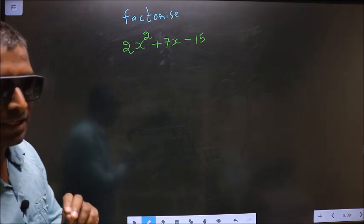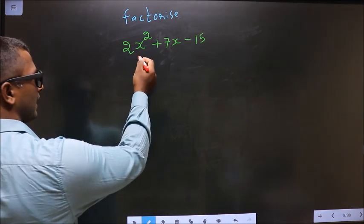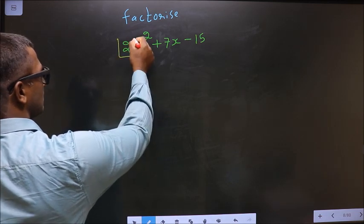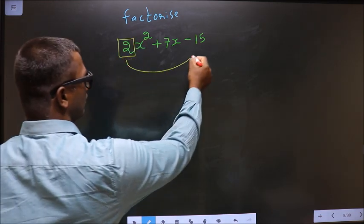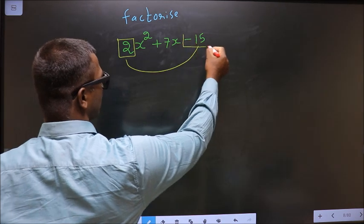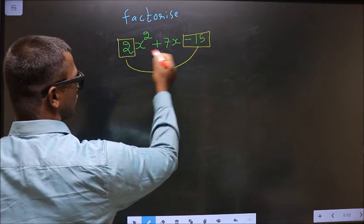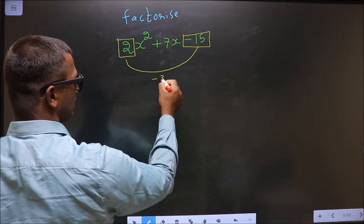The coefficient of x square, which is 2 here, should be multiplied to the constant, that is minus 15. So 2 into minus 15 is minus 30.